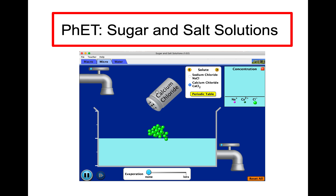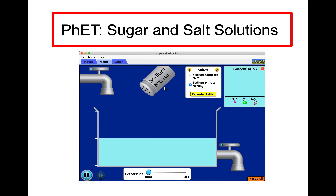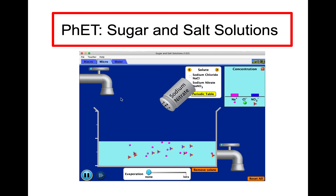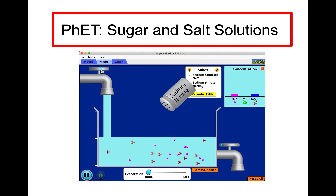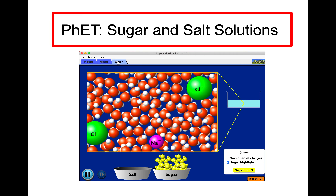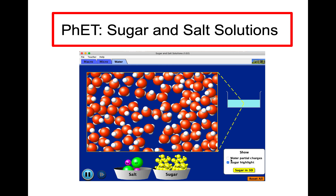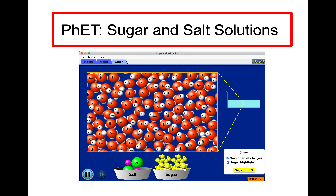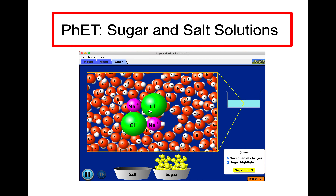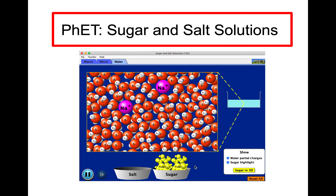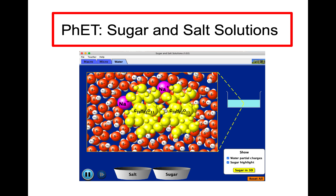Considering how they dissociate, what that means in terms of the concentration, what happens when there's a polyatomic ion involved — this is a good sim to play with. You can adjust the amount of liquid, let it out the bottom, add it to the top, and then consider what's taking place at the particle level with the intermolecular forces present, showing partial charges for the water, how an ionic compound dissociates, and how a molecular one like sugar dissociates.